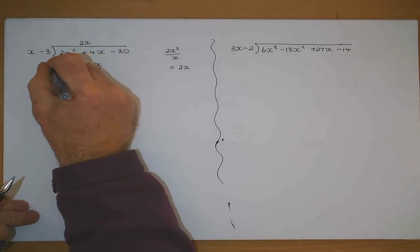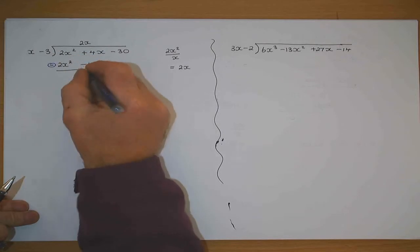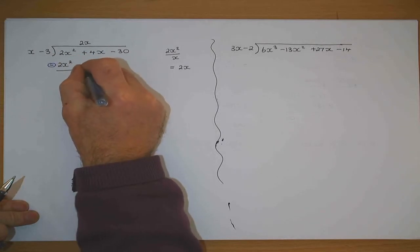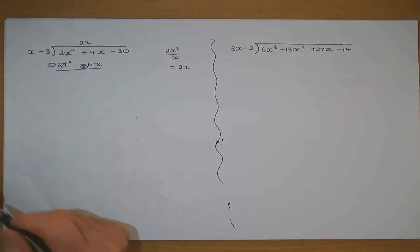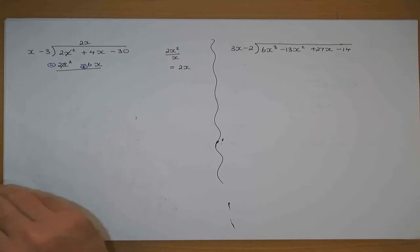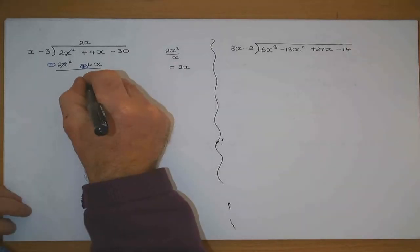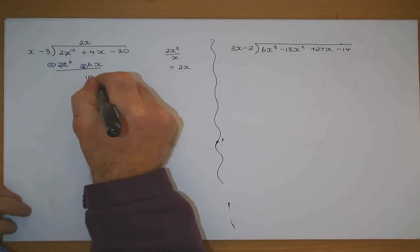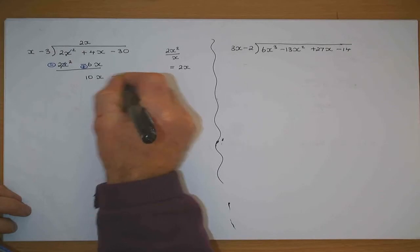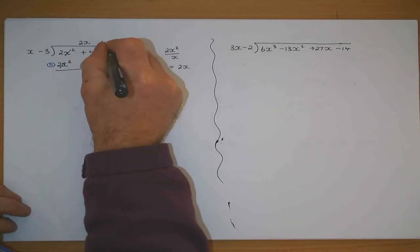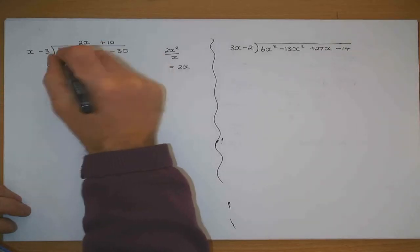That becomes a minus, that becomes a plus — and they cancel. Now I have 10x, and I bring down the minus 30. x will go into 10x 10 times.